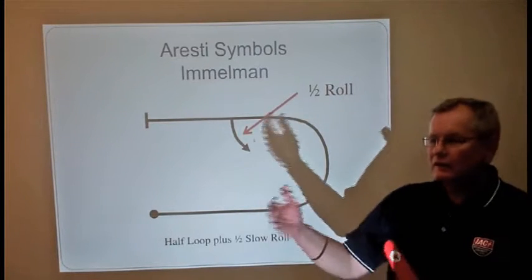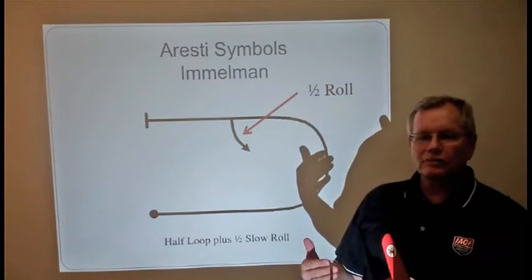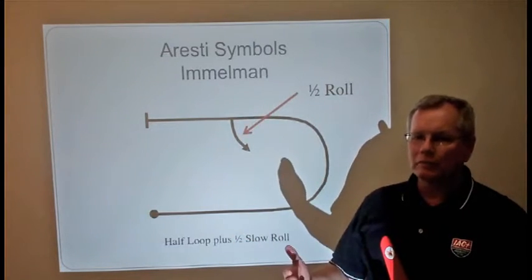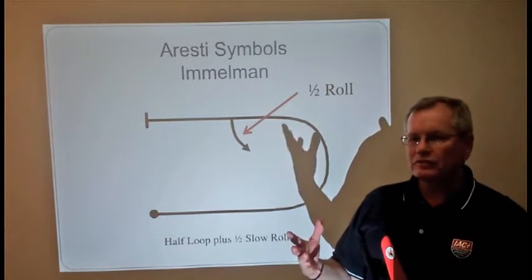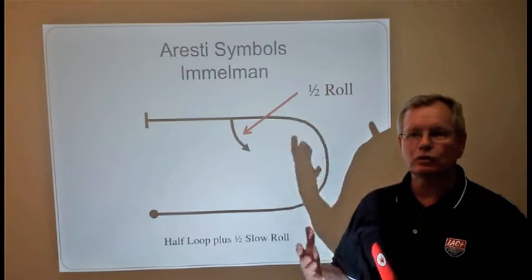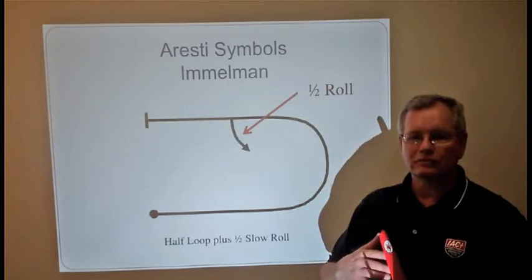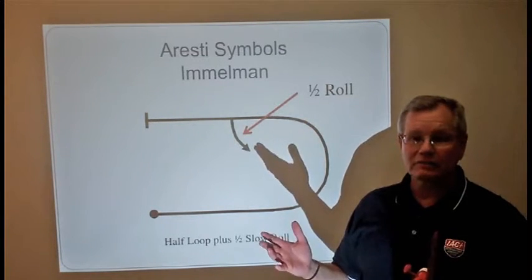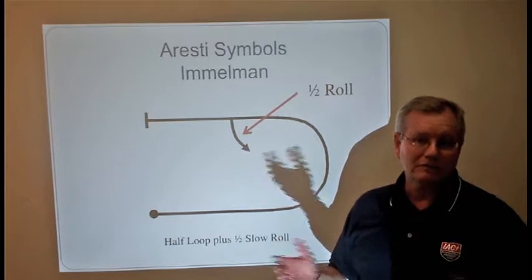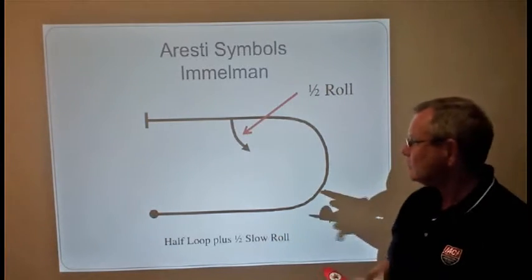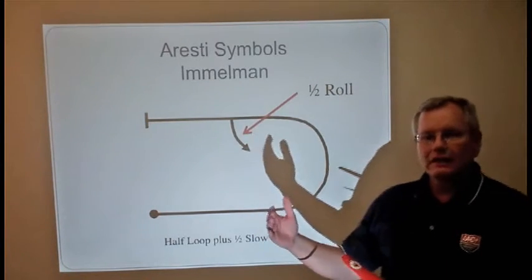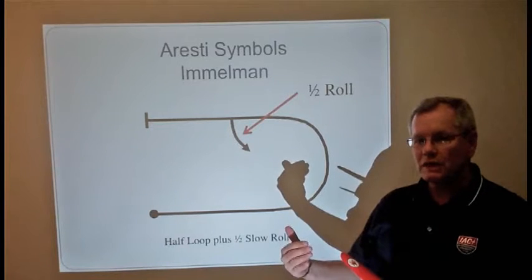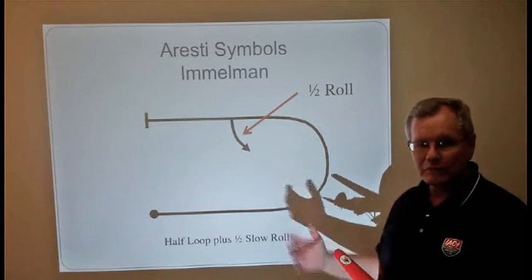Now we get into the Immelmann, and you notice the progression of what we talked about. First we talked about the loop, and that was an extensive conversation just because the loop is the basis of so many other maneuvers — most everything else is a portion of a loop in some cases. Notice that we went from the loop right into the half Cuban eight, and then we're going to go into the Immelmann.